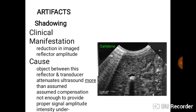The first artifact is called shadowing. When there is a stone in the gallbladder and the ultrasound beam reaches it, the beam is completely reflected and doesn't pass through. The area behind that stone becomes dark — this is called posterior acoustic shadowing, and it presents as an artifact.